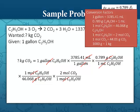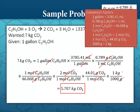Once we have moles of carbon dioxide we convert to grams by multiplying by the molar mass of carbon dioxide, 44.01 grams per mole, and the moles cancel out. Then we convert grams to kilograms by dividing by 1,000 grams per kilogram. Multiplying all numerators and dividing by denominators, we get 5.707 kilograms of carbon dioxide.